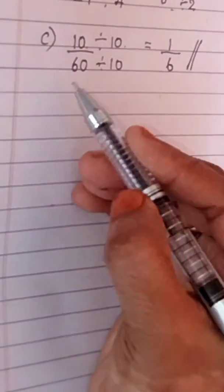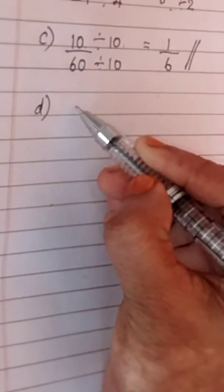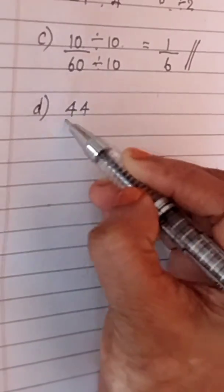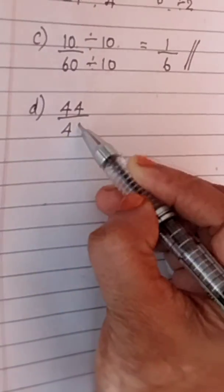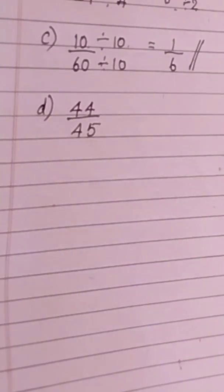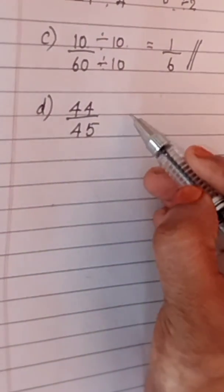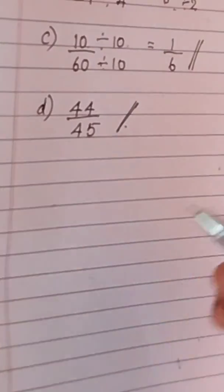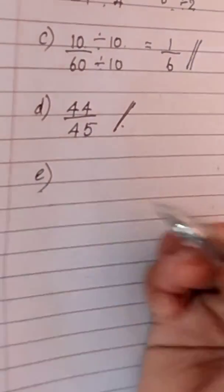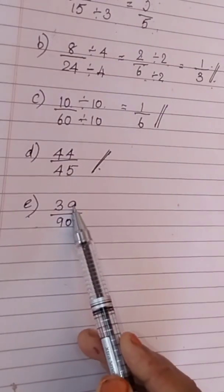Now, let us do the next question. 44 by 45. Is it possible to divide this by any common factor? No. There is no common factor. So, 44 by 45 we can leave as it is.